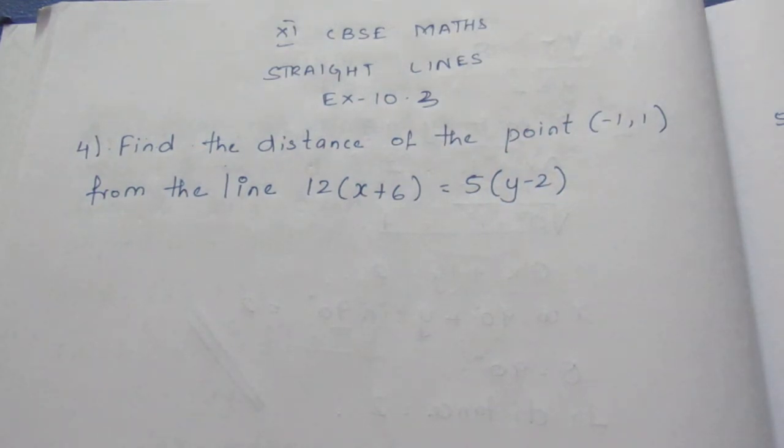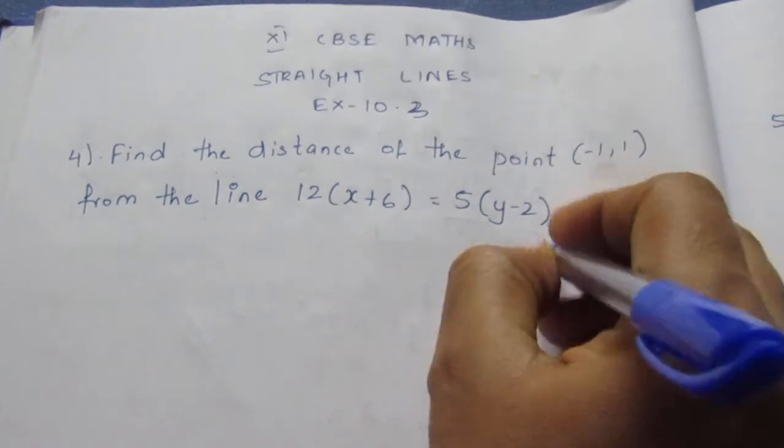Let's see the question. Find the distance of the point (-1, 1) from the line 12(x+6) = 5(y-2). Now we need to find the distance of the point from the equation.